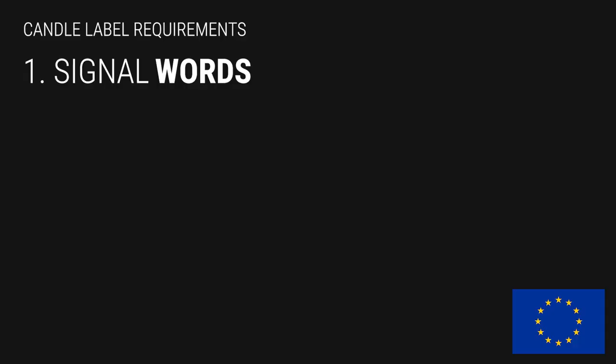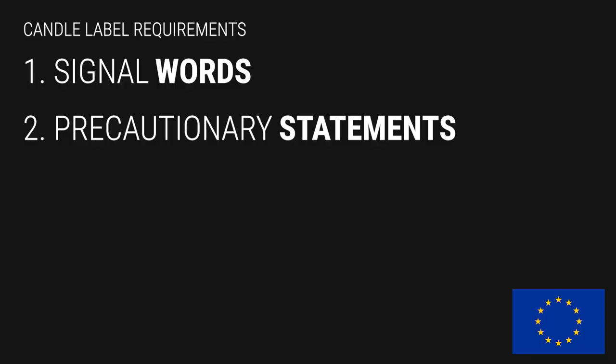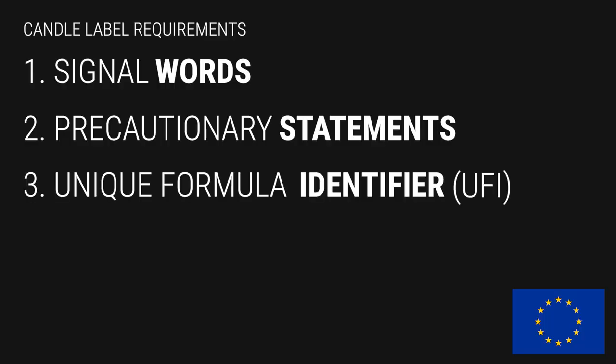It's really important to have these. If you're in the EU, there are three other things you may have to think about. One is signal words — typically the word 'warning' is the signal word that candles trigger in the EU. The second is precautionary and hazard statements, which depend on the fragrance oils you're using and the statements from the safety data sheets required on the label. The third is a unique formula identifier: a 16-digit code used by poison centers to identify the contents of the product.